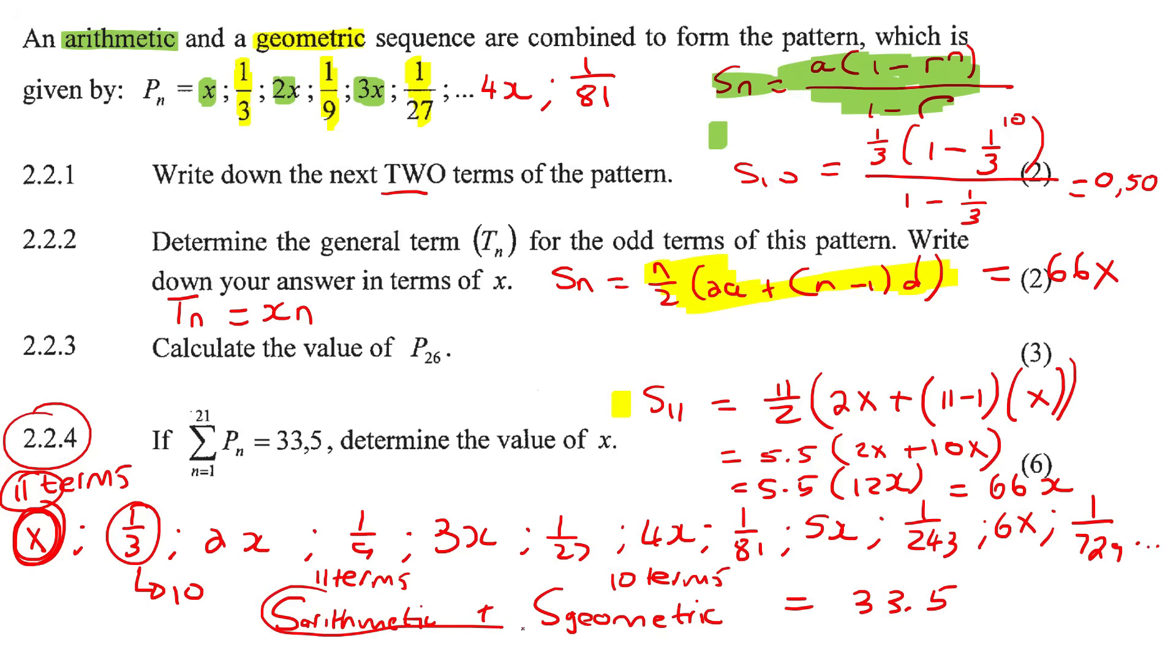Now we can come back to this equation over here, where we said that the two sequences added together must give us 33.5. So for the arithmetic, we got it as 66x. And for the geometric, we got it as 0.5. And look how simplified that is now. So now we just take the 0.5 over to the other side, where it becomes a minus. So 66x equals 33. And then don't say the answer is 2. A lot of you are going to look at this and your mind is immediately going to think, oh, 2. But be careful. x is going to be 33 divide by 66, which is actually a half.